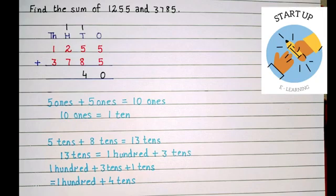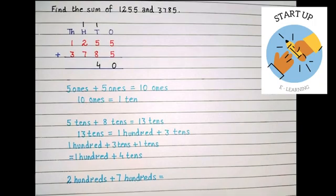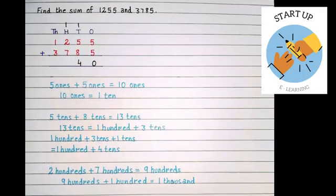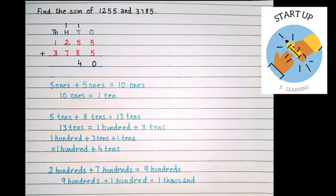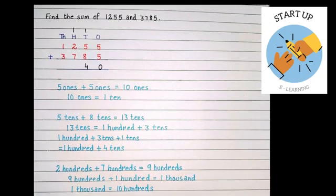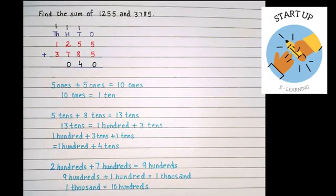Now we will add the hundreds place digit, that is 2 hundreds plus 7 hundreds. 2 hundreds plus 7 hundreds is equal to 9 hundreds, plus 1 on hundreds place which we have carried over. So 9 hundreds plus 1 hundred will become 1 thousand. Children, 1 thousand is also equal to 10 hundreds. So we are going to put 0 from the hundreds place under hundreds place, and 1 will be carried over on thousands place.